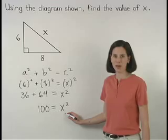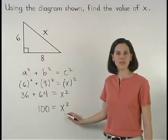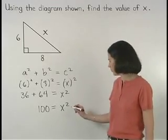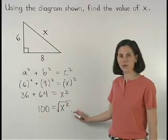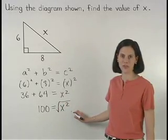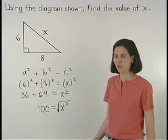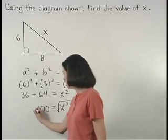Now to get x by itself, since x is being squared, we must take the square root of x. And if we take the square root of the right side of the equation, we must also take the square root of the left side of the equation.